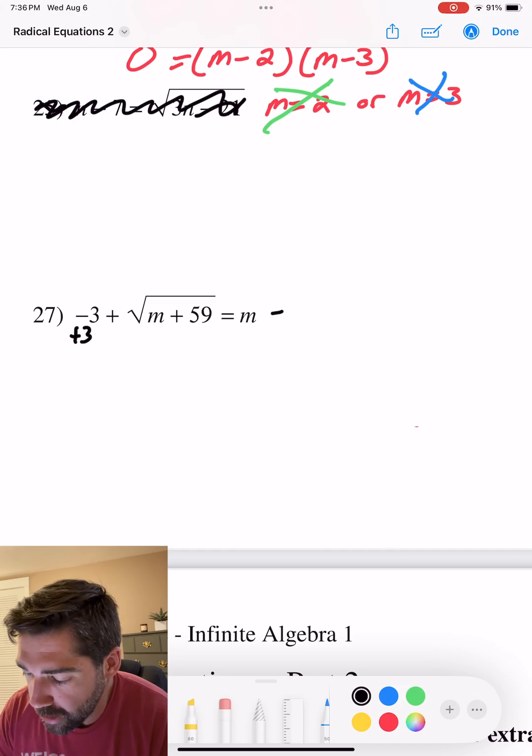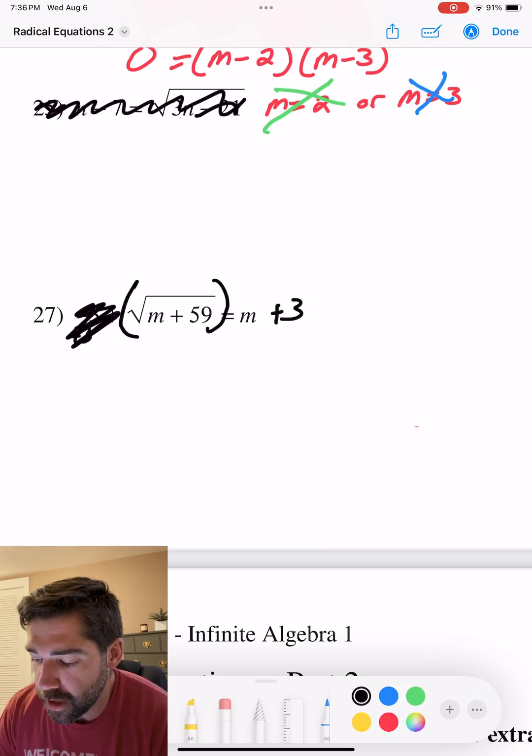If we add 3 to this side, we can add 3. That just cancels that out. Now we can square both sides.